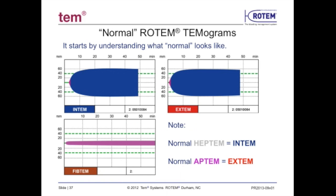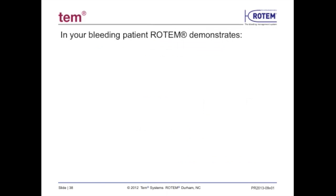A normal Heptem will look like a normal Intem, and a normal Aptem will look like a normal Extem. If these results were demonstrated in a patient with clinically significant bleeding, the cause would likely be of a surgical nature or due to a condition not detectable with Rotem analysis.